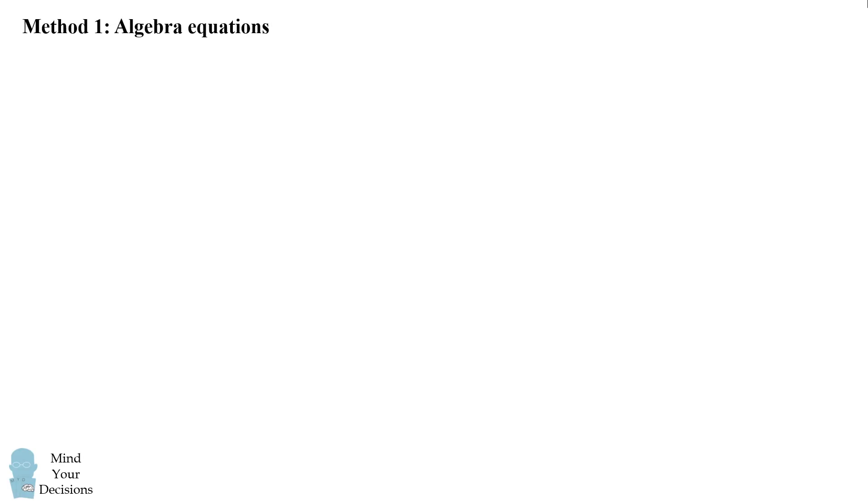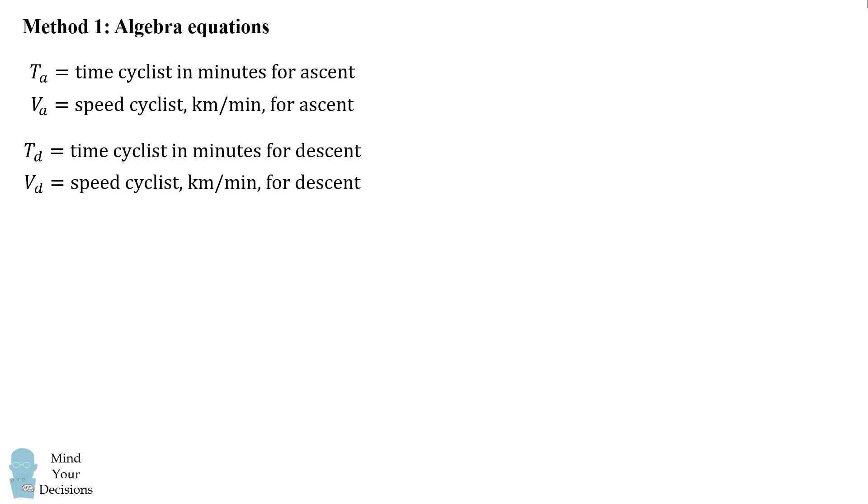So let's get started with the algebra. Let's set up some notation. Let's write ta to be the time the cyclist takes in minutes for the ascent. We'll write va for the speed of the cyclist in kilometers per minute for the ascent. We'll write td and vd for the analogous variables for the cyclist descent. We'll also write tm and vm for the motorcycle's time and speed for the climb.